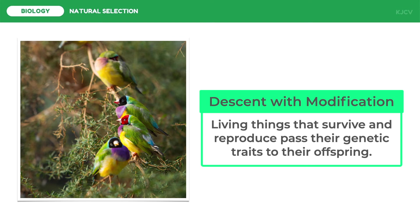A good example is the variation in the beaks of birds, which depend on their diet. Their beaks originated from an ancestor but were modified based on diet. With all of these principles at play, species may now have an enhanced survival.